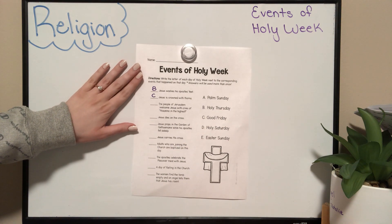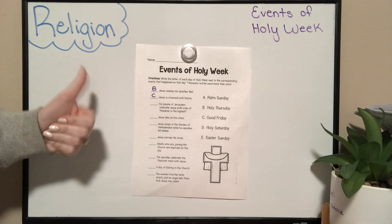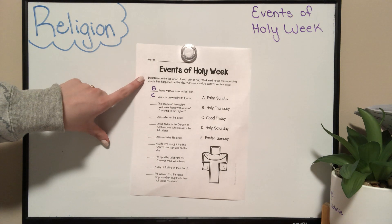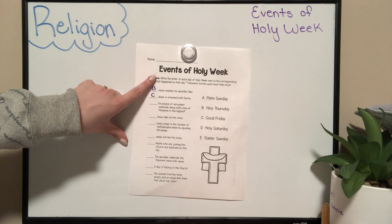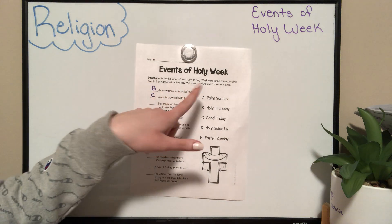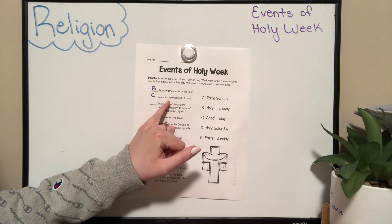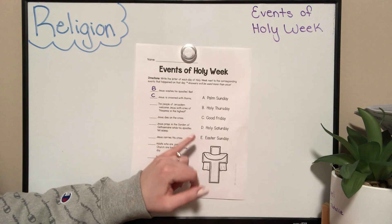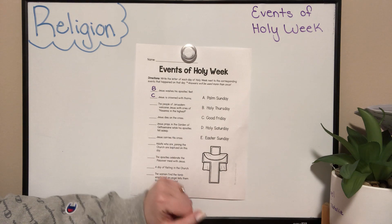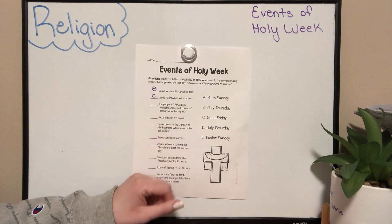All good? Pause the video if you're not. Here it says 'Events of Holy Week.' Directions: write the letter of each day of Holy Week next to the corresponding events that happened on that day. So what we're going to be doing is reading these sentences and trying to figure out which day of Holy Week it happened. If they correspond, we're going to go ahead and write the letter on the line next to it.